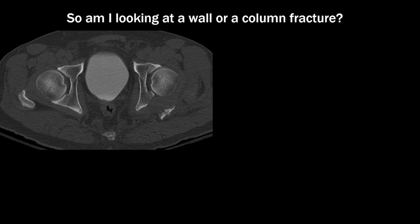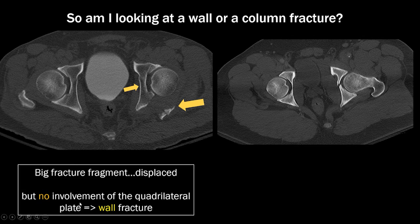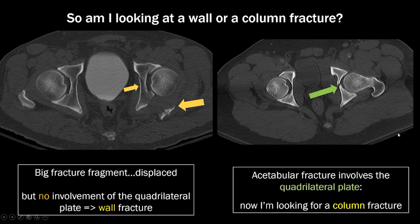Let's practice. In this patient, there's a comminuted acetabular fracture with fragments at the back. Scrolling up and down, the quadrilateral plate is intact — so this is a wall fracture. Unlike this patient, where there's a fracture clearly involving the quadrilateral plate at the medial wall of the acetabulum — since it involves the quadrilateral plate, we know we're looking for a column fracture.